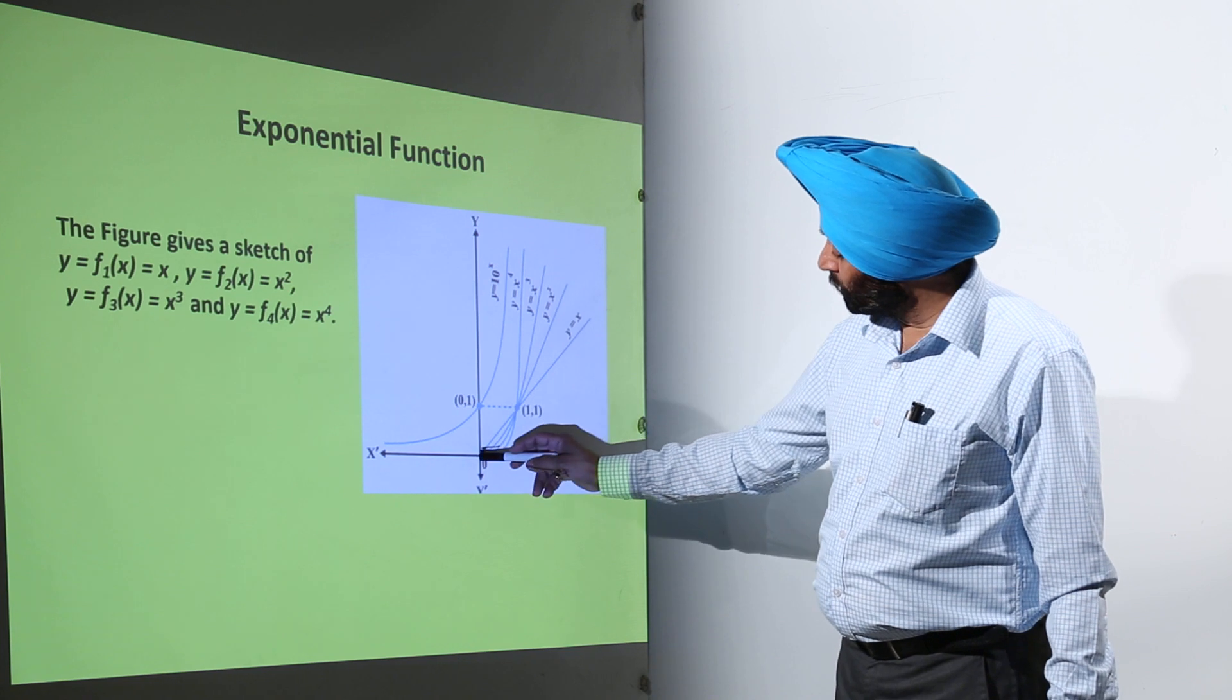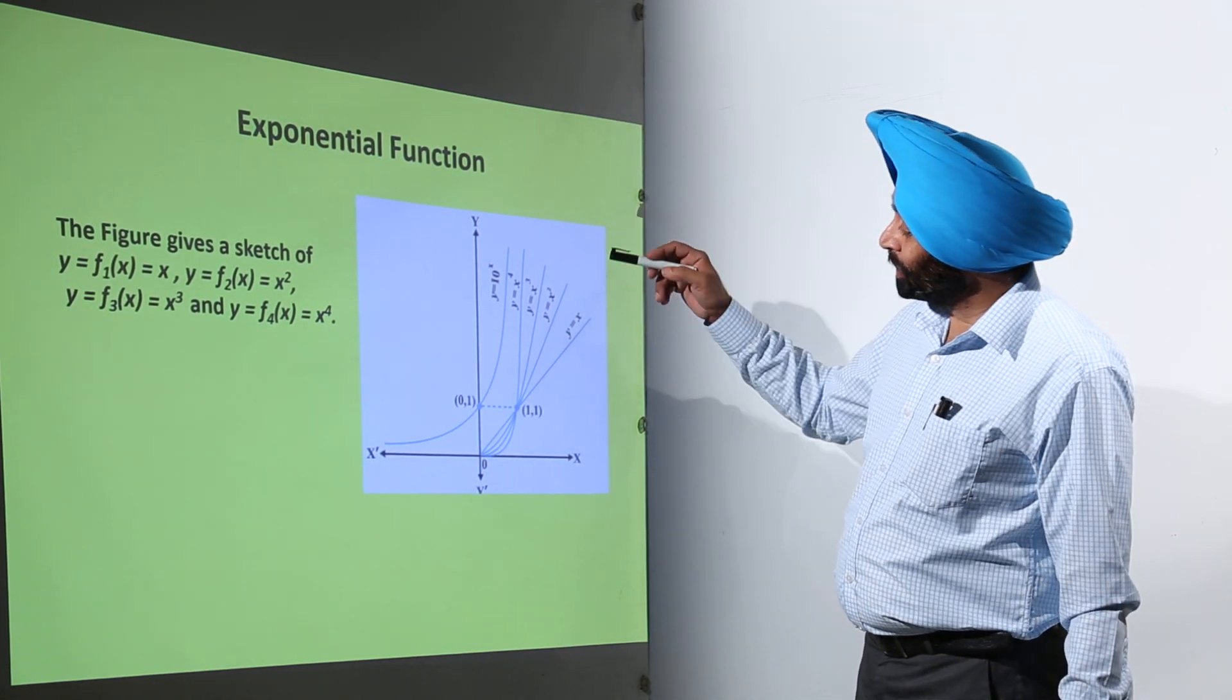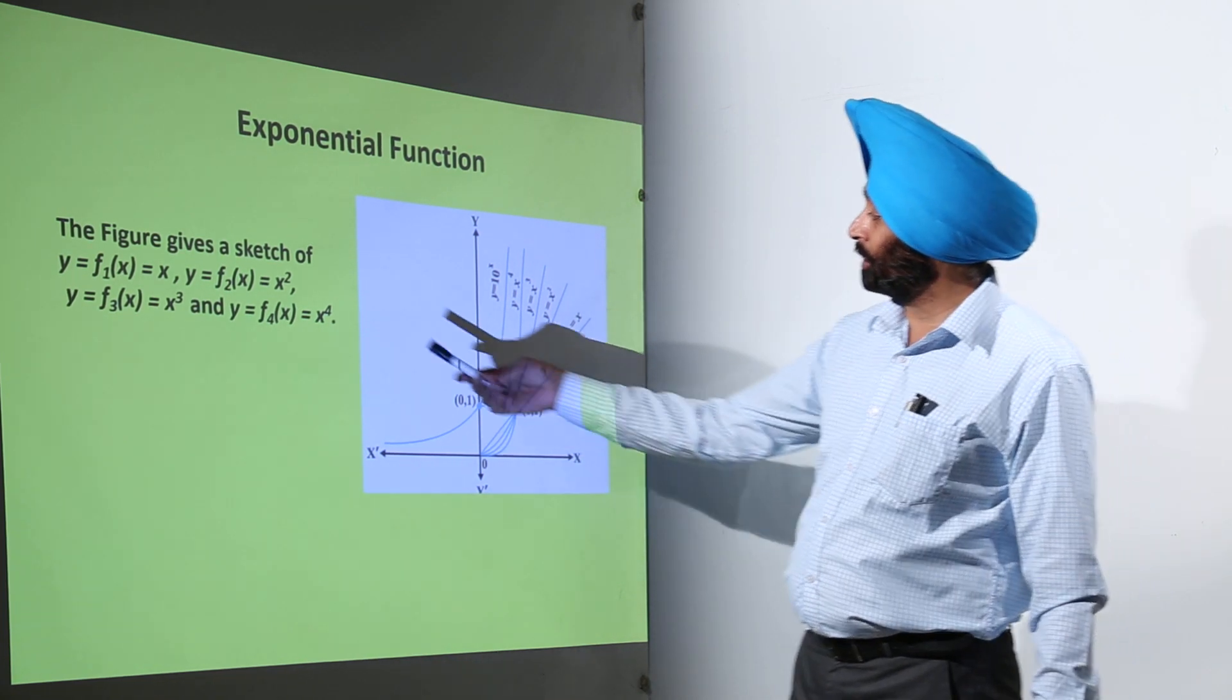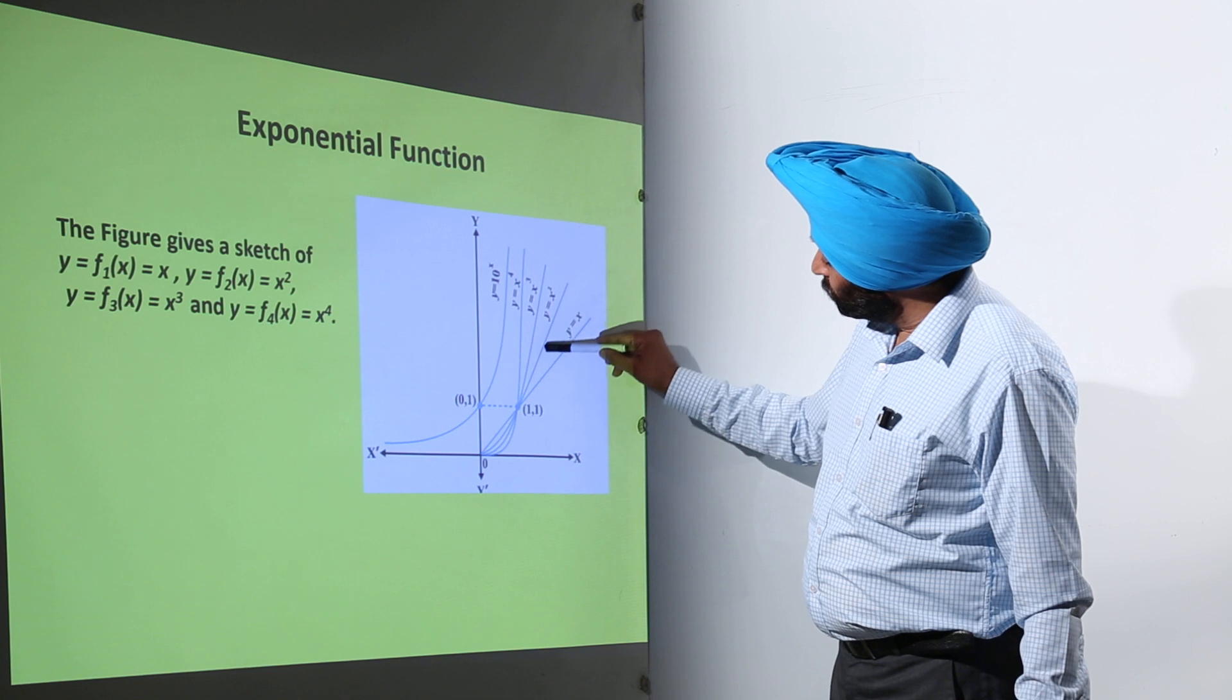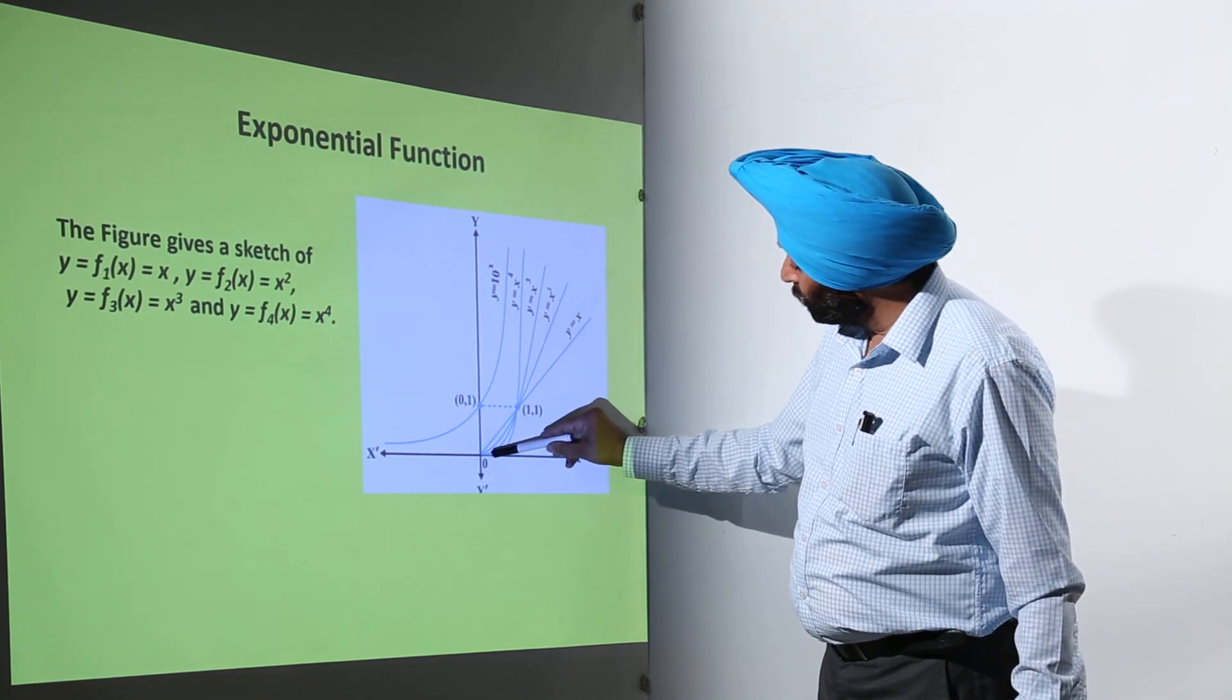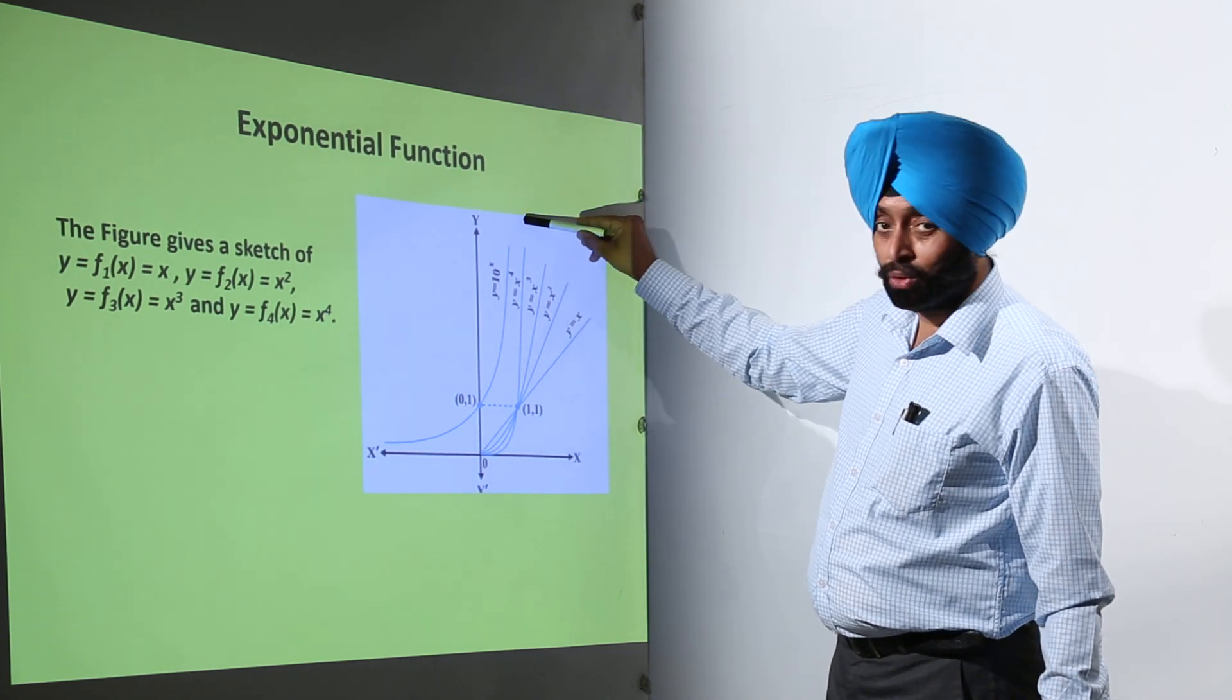So y equals x, a line passing through the origin. Then second is y equals f2(x), that is x square. So you can directly write y equals x square. So this is from starting from here, it moves like this, y equals x square. Then we are having again it goes like this, y equals x cube, then y equals x to the 4.